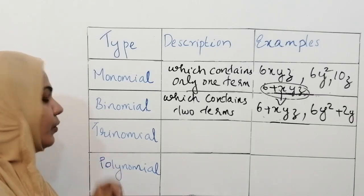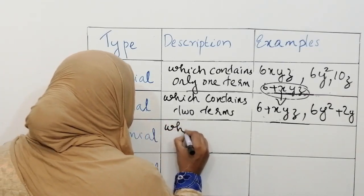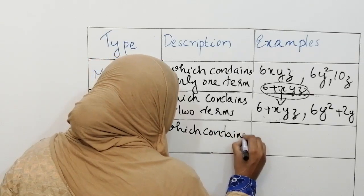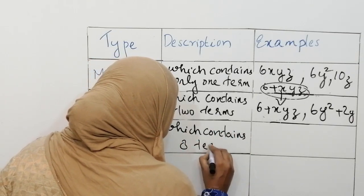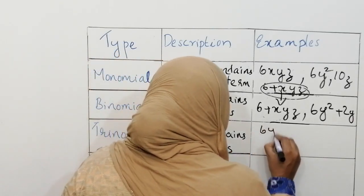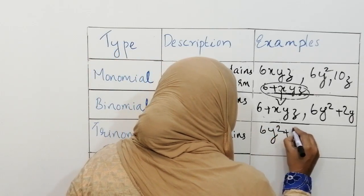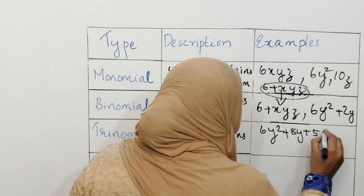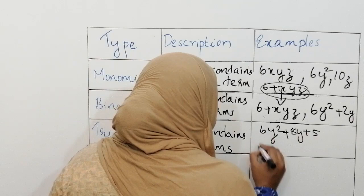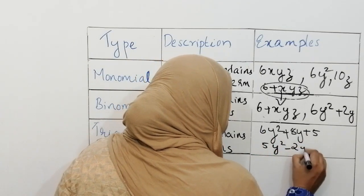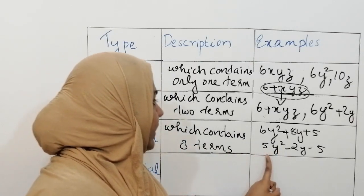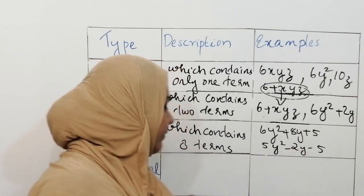Next, what is trinomial? Trinomial contains three terms. For example, 6y squared plus 8y plus 5 — you can see it has three terms. Another example for trinomial is 5y squared minus 2y minus 5, which also has three terms.